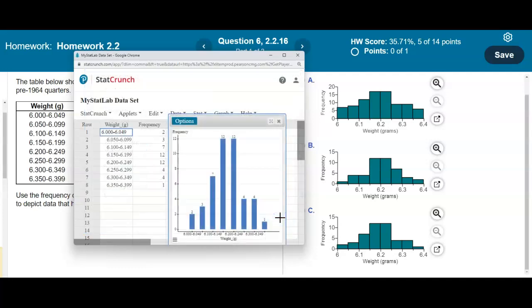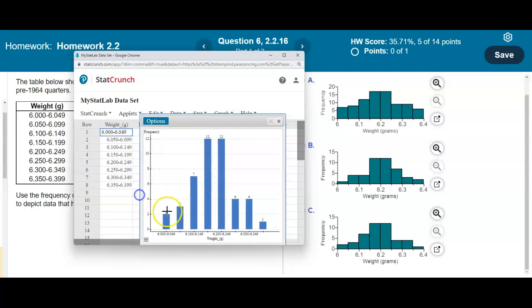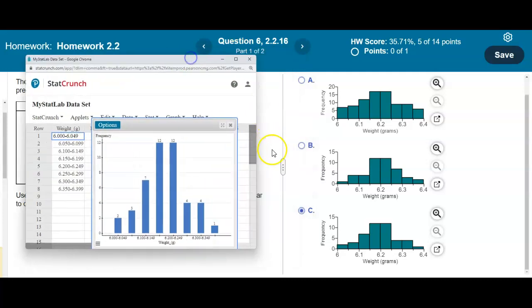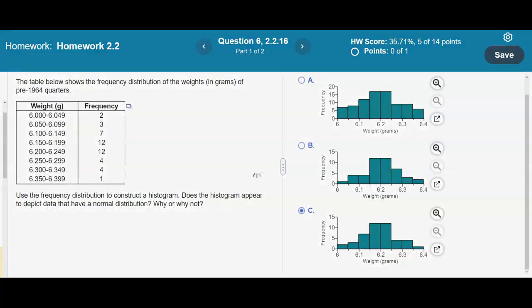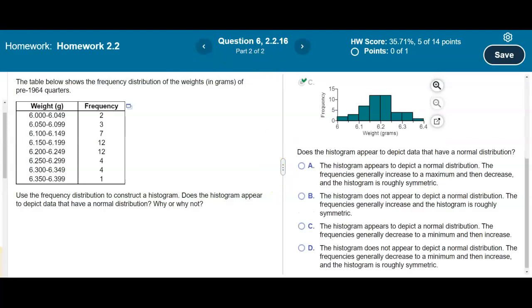You can see what our bar graph looks like. If these bars touched each other, that would represent a histogram. You can see this represents a very close look to our option C, going from 2 to 3, 7, 12, 12, 4, 4, and 1. We'll select final check and there is our result.